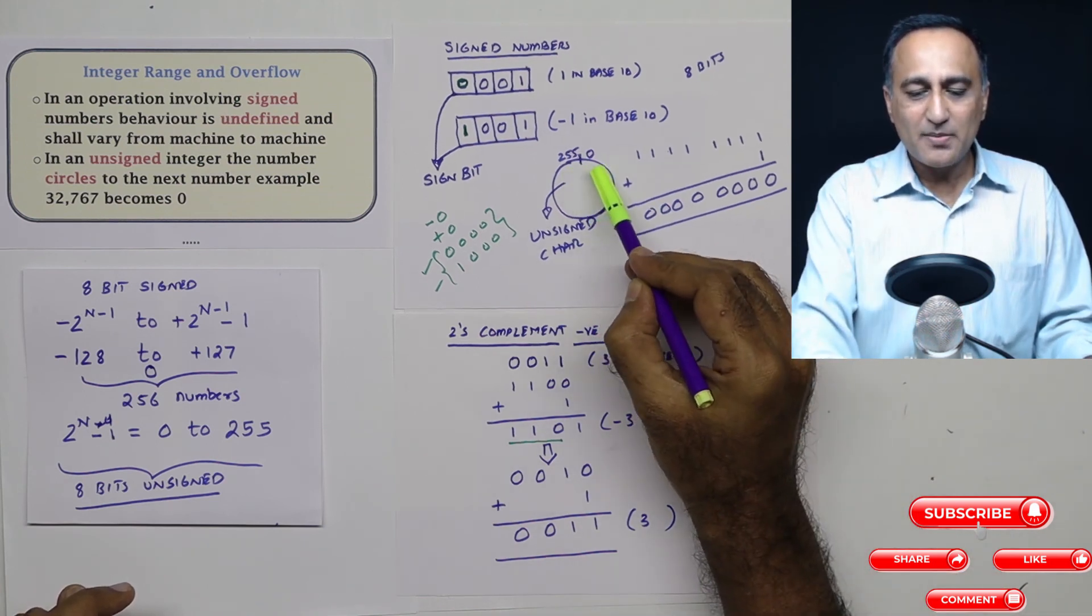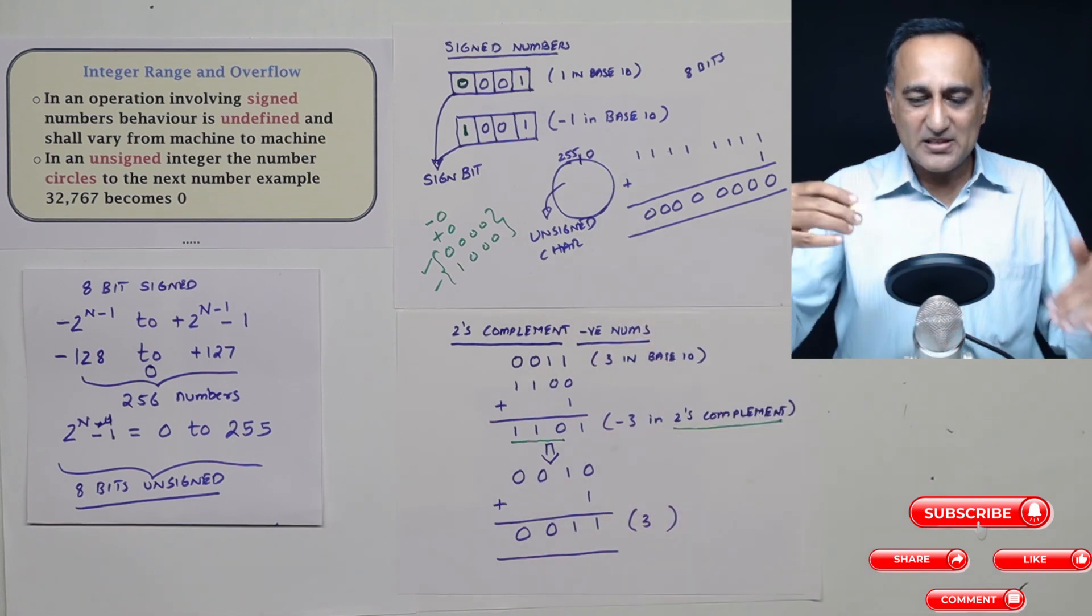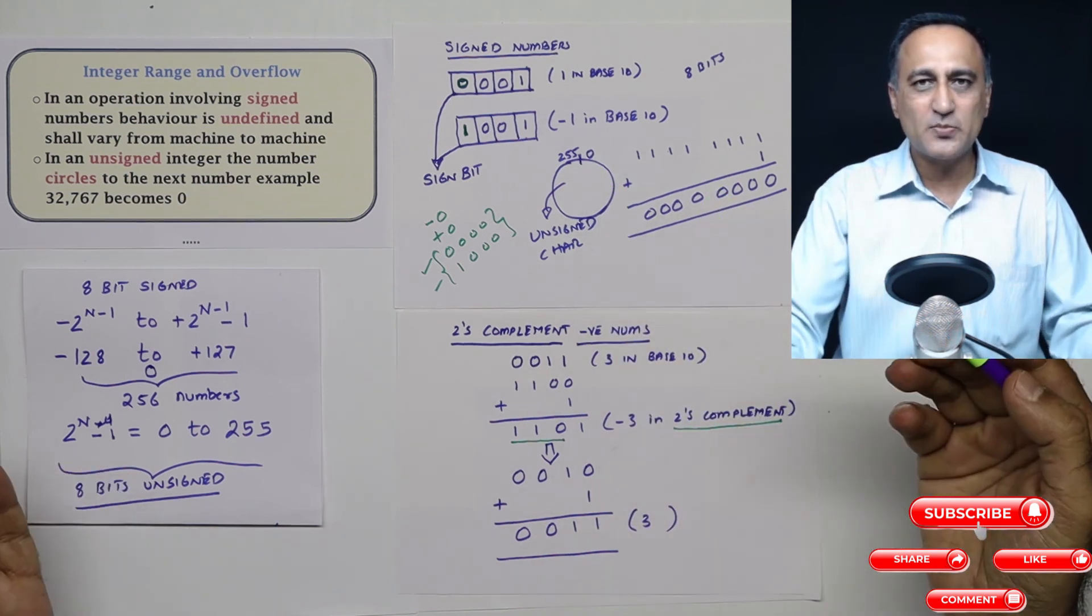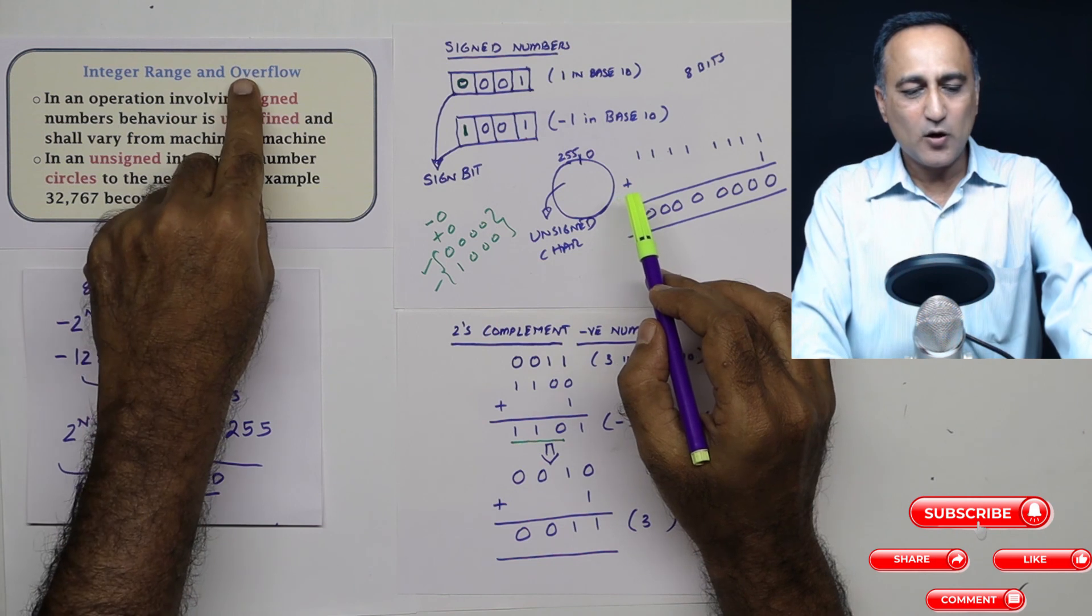So when I push 255 by one, it basically overflows or its capacity goes beyond. That is known as the overflow.